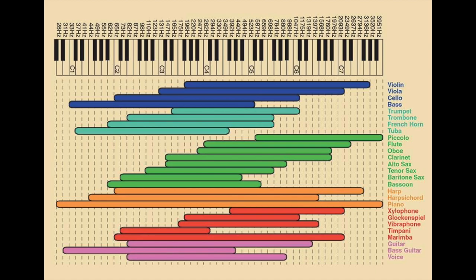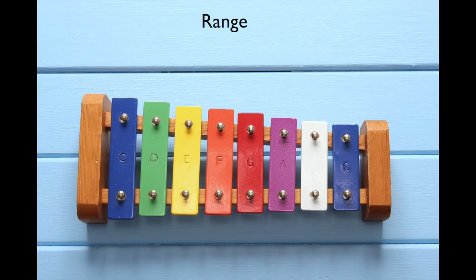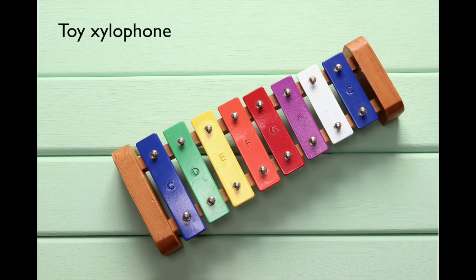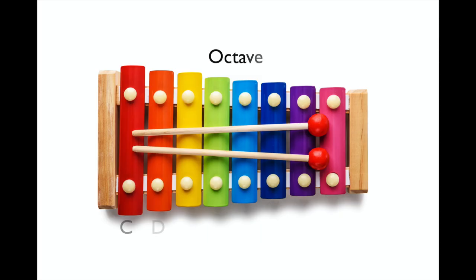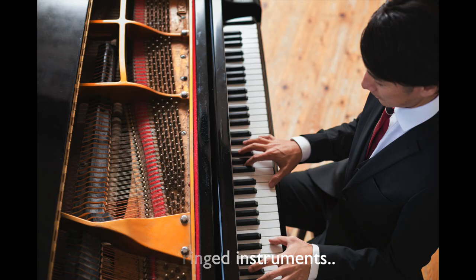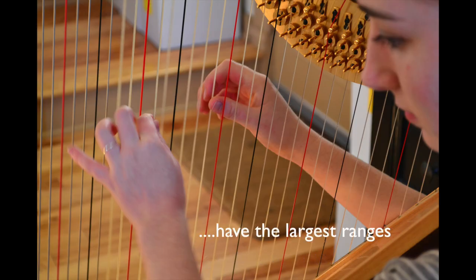The last word we will talk about today is range. Range means the number of notes an instrument can play from the lowest to the highest. This cute little toy xylophone has a range of eight notes — we call that an octave in music, but we'll talk about that next time. Stringed instruments like violins, pianos, and harps have the largest ranges of all musical instruments.